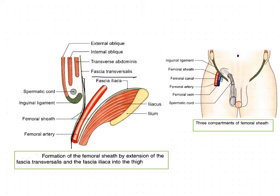The posterior wall is formed by the fascia iliaca, which is the continuation of the anterior abdominal wall. This fascia covers the iliacus muscle. Inferiorly, the sheath merges with the connective tissue around the femoral vessels.